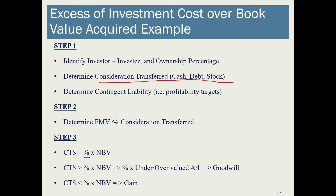If the consideration transferred is greater than our share of the company's net book value, we identify where the difference comes from — under or overvalued assets and liabilities — and calculate our share of that difference. Any unexplained difference would be goodwill. Conversely, if the consideration transferred is less than our share of the net book value, we may have a gain. This last point is probably not relevant for chapter one but will come up in the future.